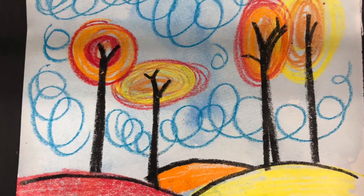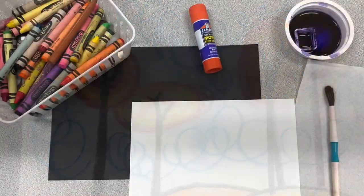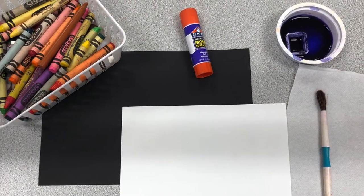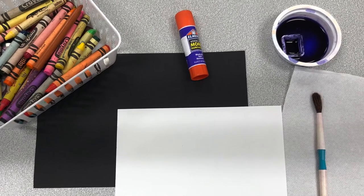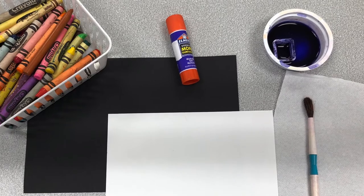Let's create a warm color fall landscape drawing. For this project you will need a black rectangle of paper, a white rectangle of paper, crayons, a glue stick, and watercolor paints.